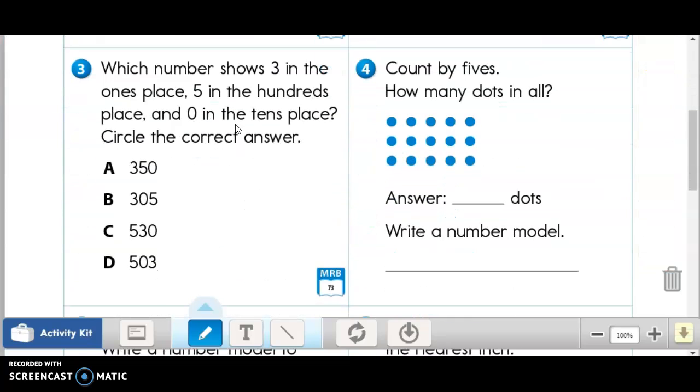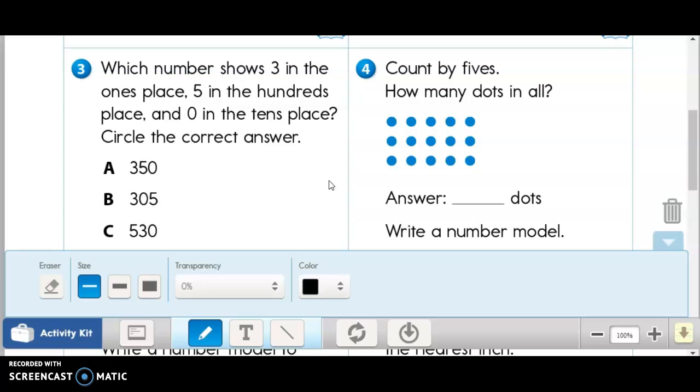Now, let's try number three. Which number shows three in the ones place, five in the hundreds place, and zero in the tens place? Circle the correct answer. The first thing I do when I come to something like this, I always draw these three lines. And I just say, okay, let's put that in the ones, tens, hundreds. Three in the ones place, boom, got it.